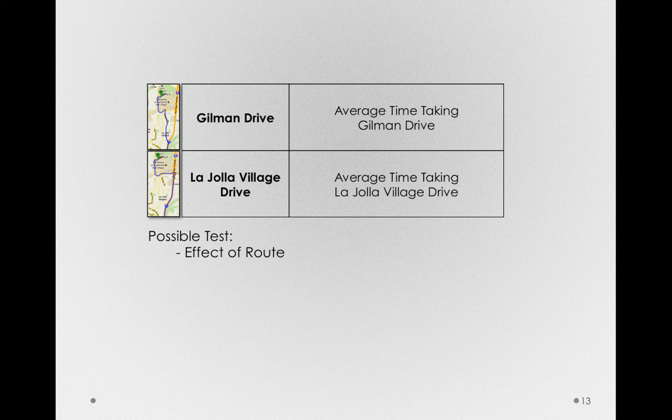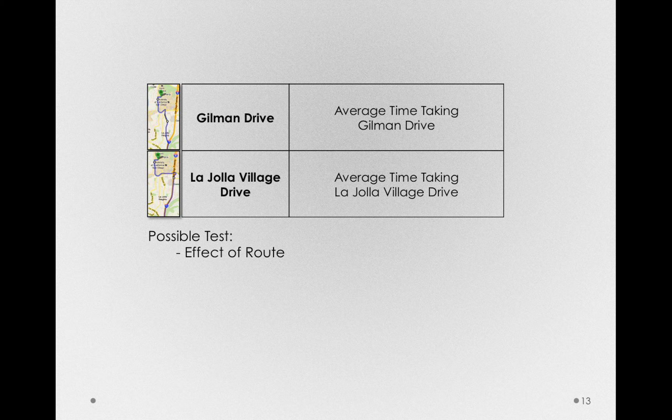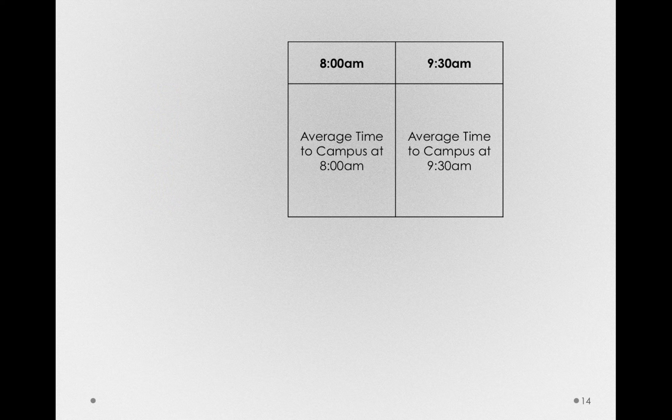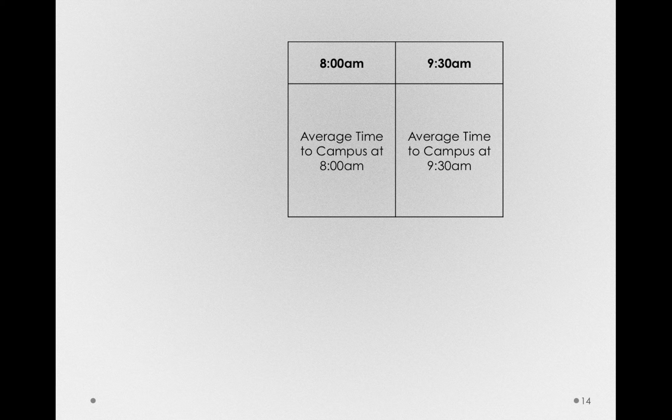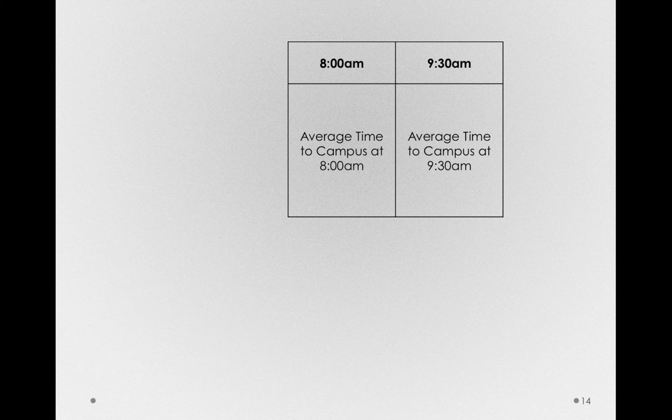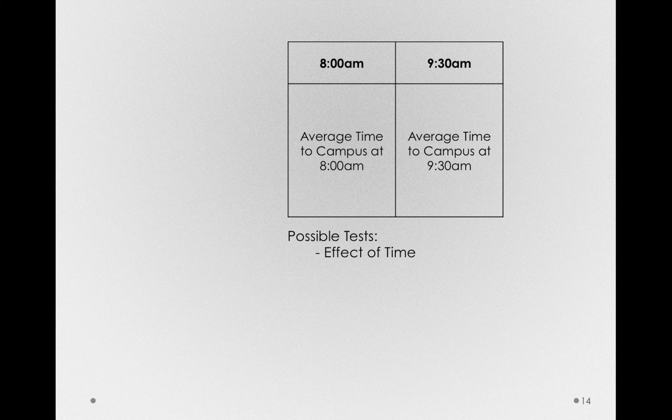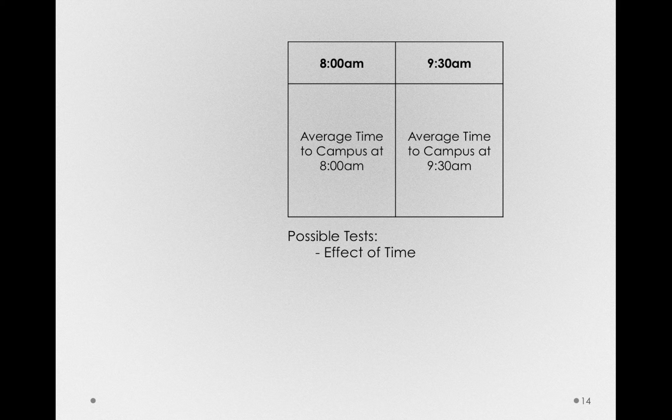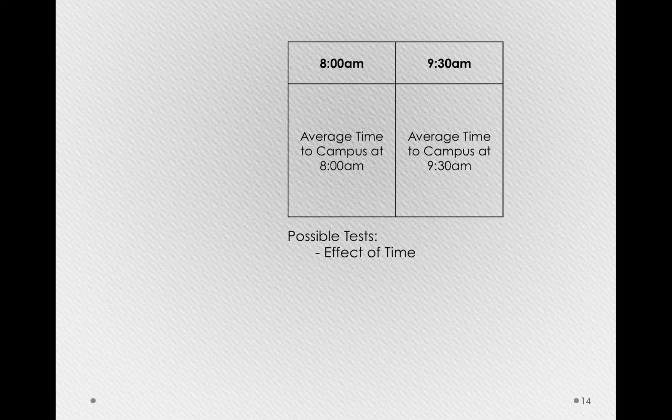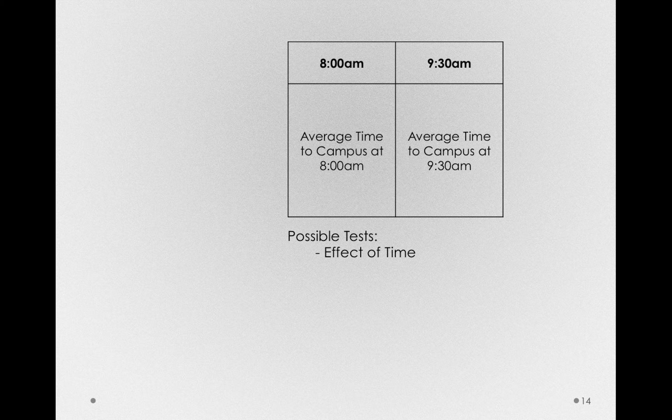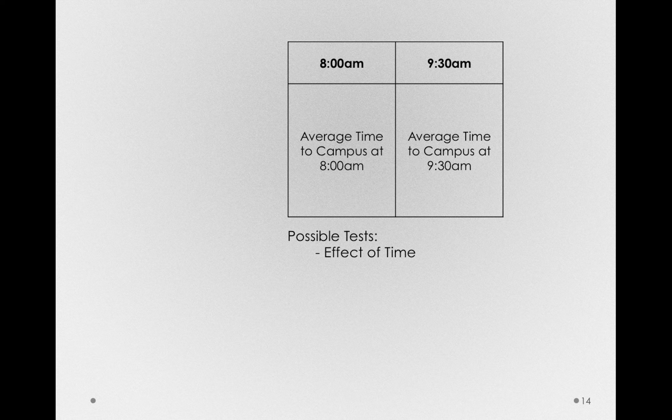Now, there's another factor I could consider, something completely independent of which route I take to campus. And that might be what time of day I'm driving to campus at. So, if I also measured at 8am and 9:30am the average time it takes me to get to campus, I would also have only one test I could actually run. That is, what is the effect of time? Is it faster for me to get to campus if I leave at 8 or 9:30? Now, what's great about multi-factor studies is that I can measure these two simultaneously. And by measuring them together, I get one additional test beyond simply the effect of route and the effect of time.